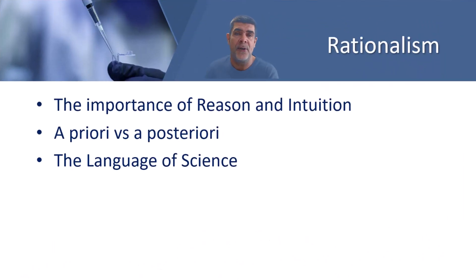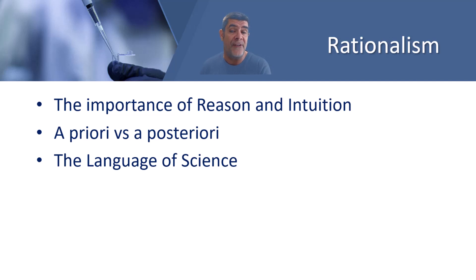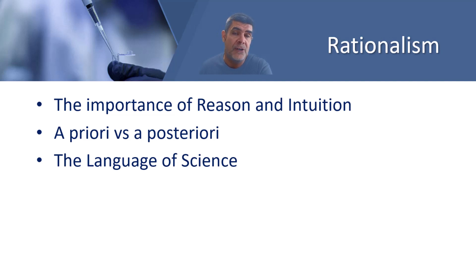A contrast to the empirical model of scientific inquiry is rationalism. In rationalism, we need to understand the importance of reason and intuition. We need to contrast a priori statements with a posteriori statements, and understand the language of science. Rationalism is the theory that reason rather than experience is the foundation of scientific knowledge — knowledge can only be constructed from reasoning and intuition. Rationalism is the opposing school of thought to empiricism.